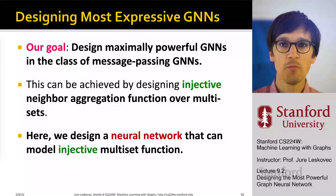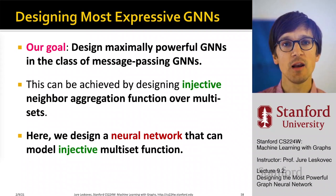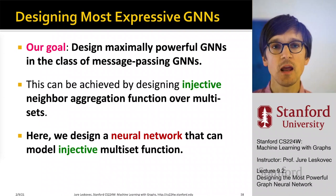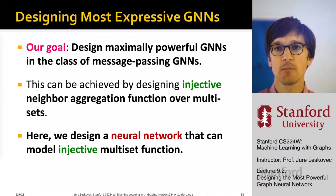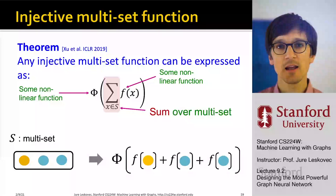Our goal is to design the maximally powerful GNN among all possible message-passing graph neural networks. To do this, we need to design an injective neighborhood aggregation function — one that never loses information when aggregating from children to create a message for the parent. The key property is injectivity of the aggregation function, so we need a neural network that can model this injective multiset function.